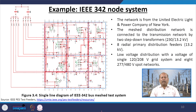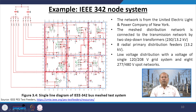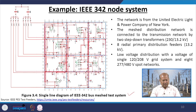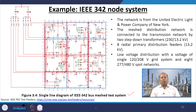We can also look at the IEEE 342-node system, a network from the United Electric Light and Power Company of New York. The mesh distribution network is connected to a transmission network by two step-down transformers (230/13.2 kV), with eight radial primary distribution feeders at 13.2 kV, low-voltage distribution at 120/208 V grid system, and eight 277/480 V spot networks. Looking at the single-line diagram of the IEEE 342-bus meshed system, it is very complicated, and energy can be captured from any corner of the city — good, but too complicated to manage.